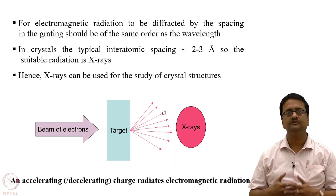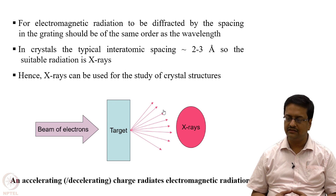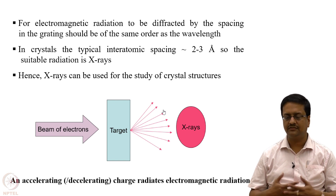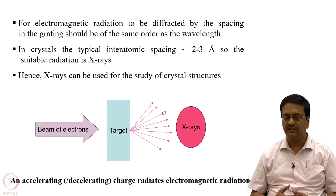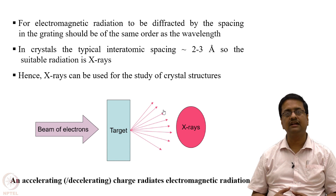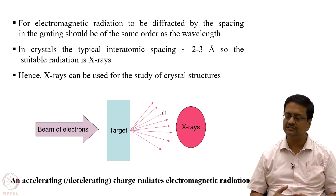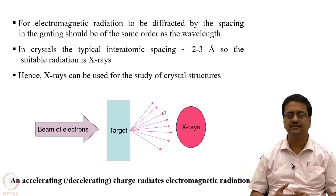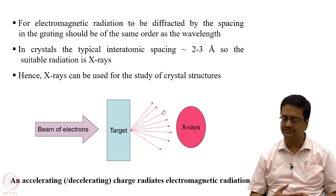That is why we use X-rays of very small wavelength — 1 to 2 to 3 angstroms is suitable for X-ray diffraction. Hence X-rays can be used to study structures because interatomic distances or interplanar distances are in the range of 1 to 2 to 3 angstroms.